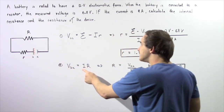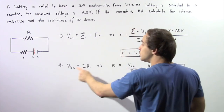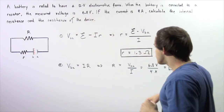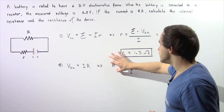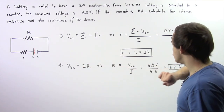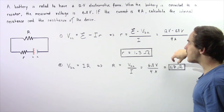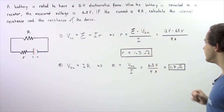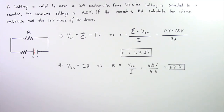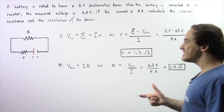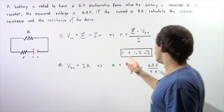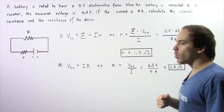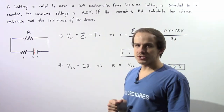We know I is 4 amps and V_BA is 6.8 volts. Solving for R, the resistance of our device is equal to 6.8 volts — the terminal voltage — divided by 4 amps, which gives us 1.7 ohms. So the internal resistance of our battery is 1.3 ohms and the resistance of our device is 1.7 ohms.